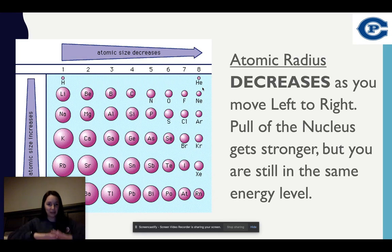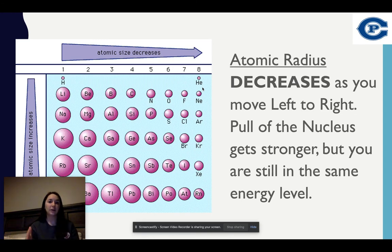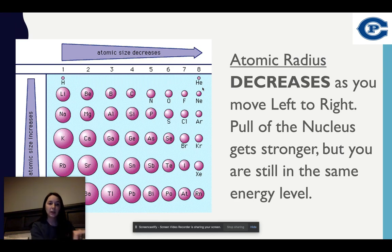So those valence electrons are being more attracted because there are more protons in the center making it more positive. I have the same energy levels as I move left to right, but because I have a more positive nucleus with more protons, it's decreasing my atomic radius because it's pulling toward the nucleus.